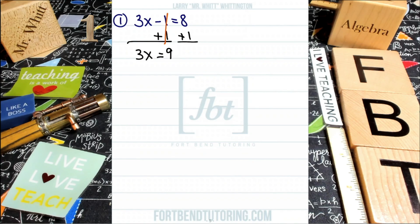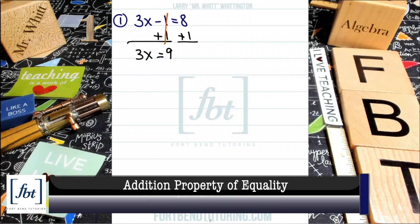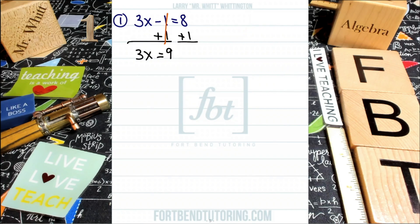We now have a simplified equation that reads 3x equals 9. If you're counting the number of steps that we've done thus far, we did one step, which was using the addition property of equality. Now, because the number three, that coefficient, the number in front of the variable, that value is multiplying on our variable x that we want to get by itself, we'll use the opposite operation of division in order to isolate the variable.